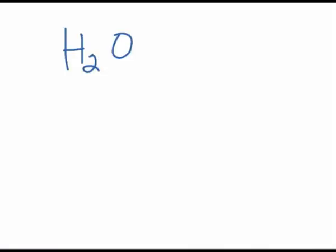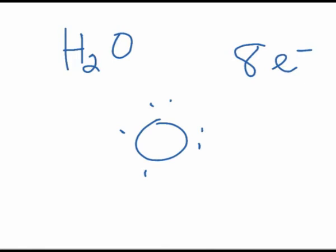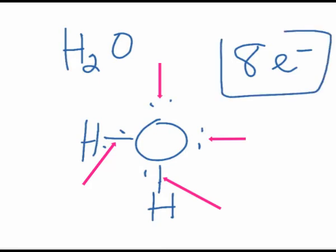Let's do water. Let's start with oxygen, which has 6 valence electrons: 1, 2, 3, 4, 5, 6. Now let's add some hydrogens in — hydrogen each has 1, so we have a total of 6 plus 2, which is 8 valence electrons. Hydrogen has 1, hydrogen has 1. These 2 are going to be shared, and I have a bond. I have a total of 8 electrons, and each bond is 2, so: 2, 4, 6, 8. I need to be sure I have the total number of valence electrons — we have 8. Here's water.